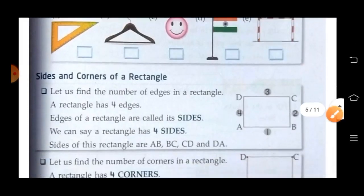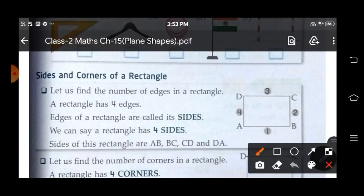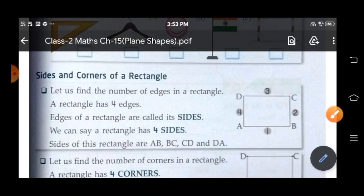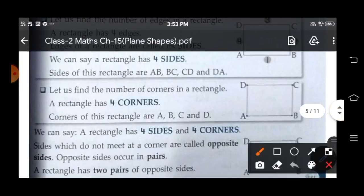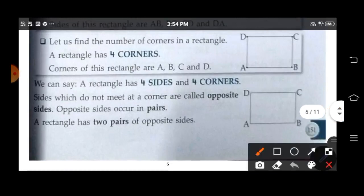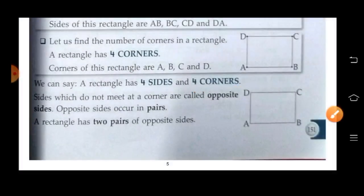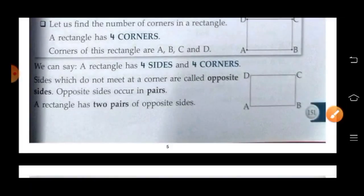Now sides and corners of a rectangle. So let's find the number of edges in a rectangle. A rectangle has four edges. 1, 2, 3, 4. All the sides of a rectangle are known as edges, and we can say that a rectangle has four sides: AB, BC, CD and DA. Now let's find the corners of a rectangle — it has four corners: A, B, C and D. A rectangle has four sides and four corners. Sides which do not meet at corners are called opposite sides.